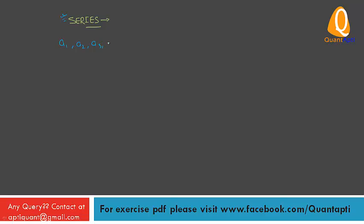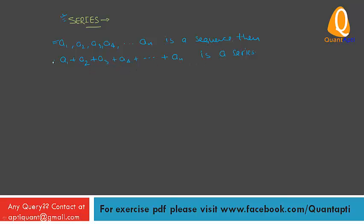Next: series. If A1, A2, A3, A4, ..., AN is a sequence, then A1 + A2 + A3 + ... + AN is a series. A series is finite or infinite according as the number of terms in the corresponding sequence is finite or infinite.